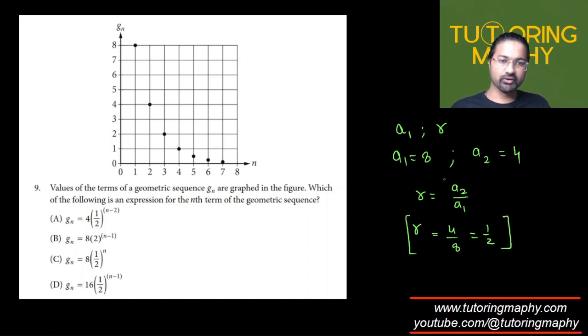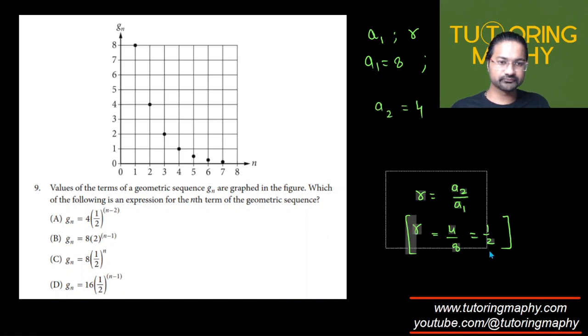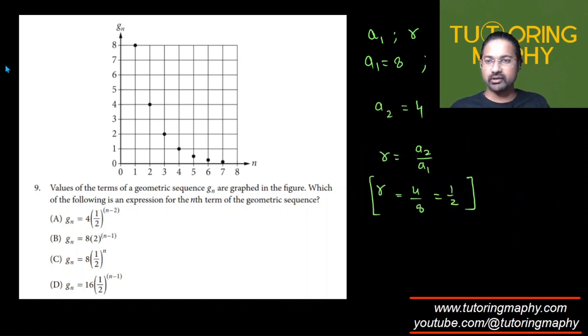So we got the common ratio, we got the first term, and it's very easy to find the nth term now. The nth term is going to be a sub n equals a1 times r raised to n minus 1, so this will become 8 times 1 over 2 raised to n minus 1.